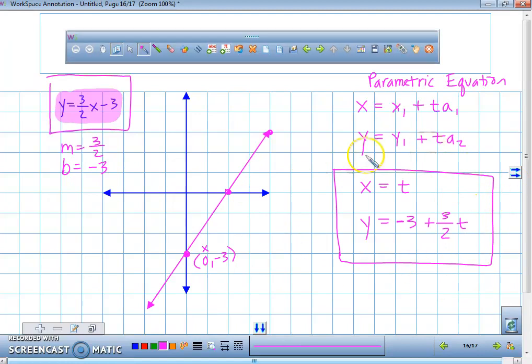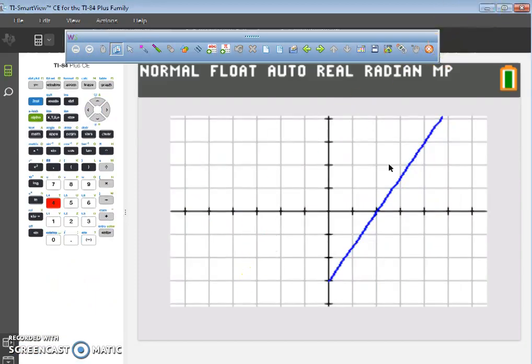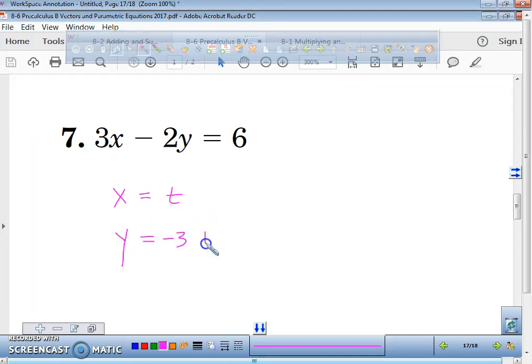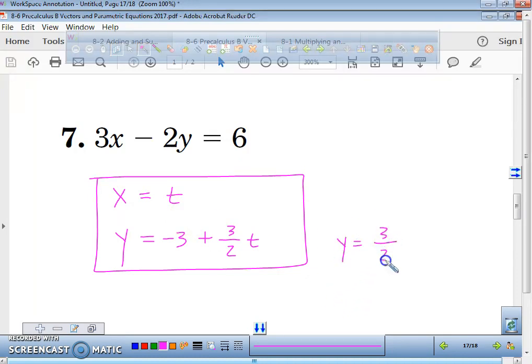So right here, this is your set, or could be a set of parametric equations that represent this linear function. So your answer for number 7 is x equals t and y equals negative 3 plus 3 over 2t. Now, if you wrote y equals 3 over 2t minus 3, that's okay to emulate that same thing.